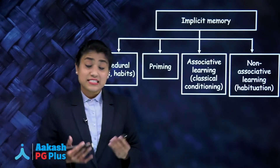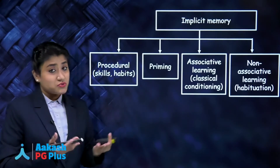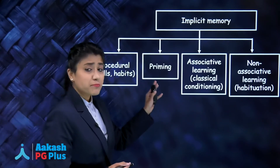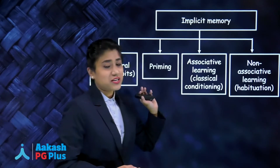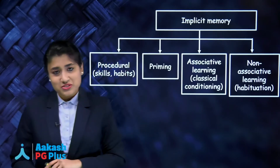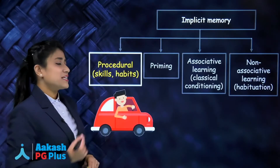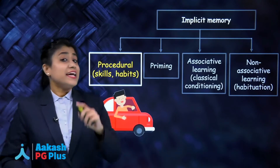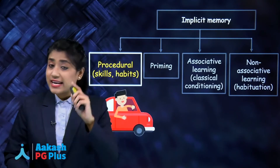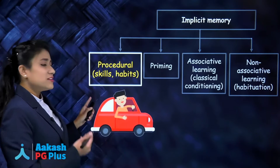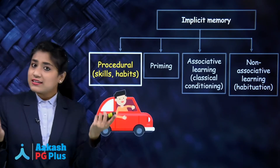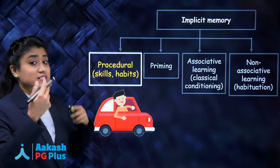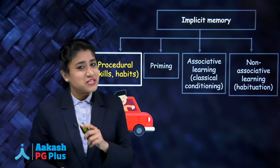Implicit memory is divided into: procedural memory, priming, associative learning, and non-associative learning. Procedural memory tells about skills and habits. The example is driving a car, which comes under procedural memory — a subtype of implicit memory.